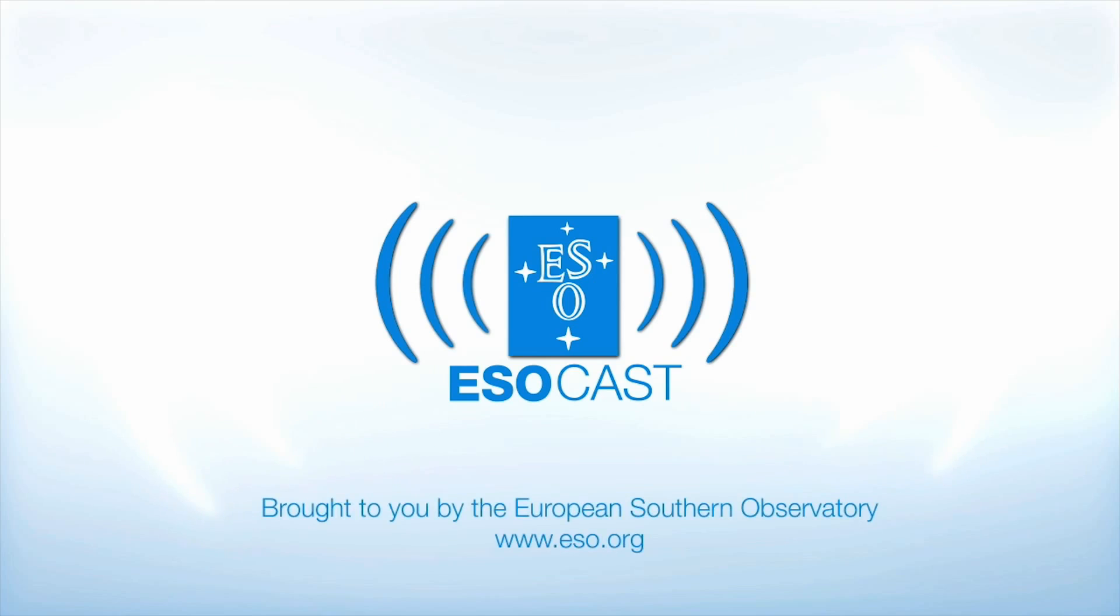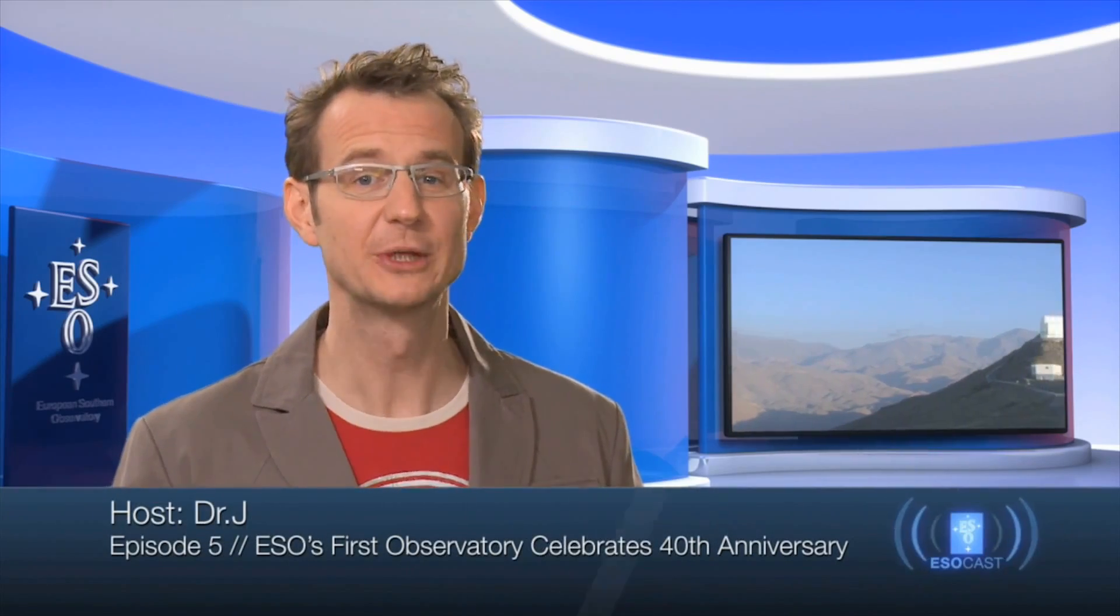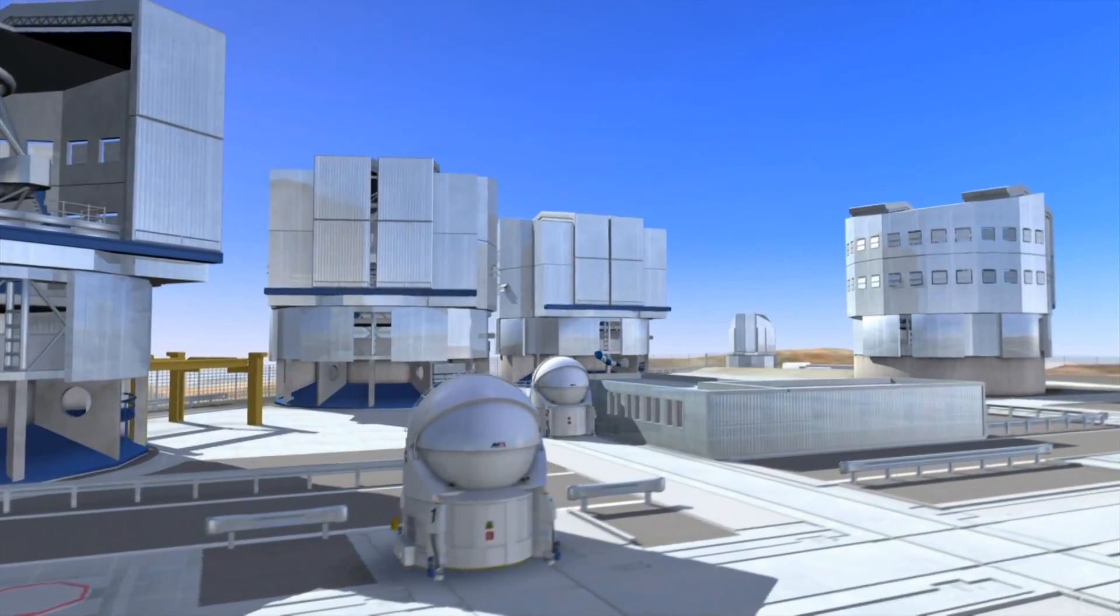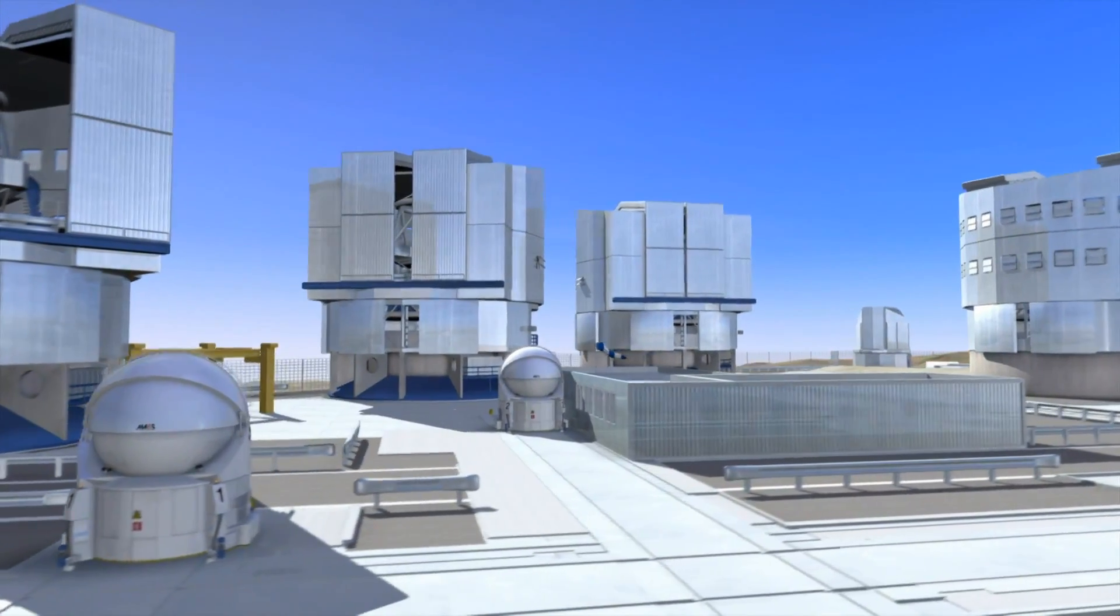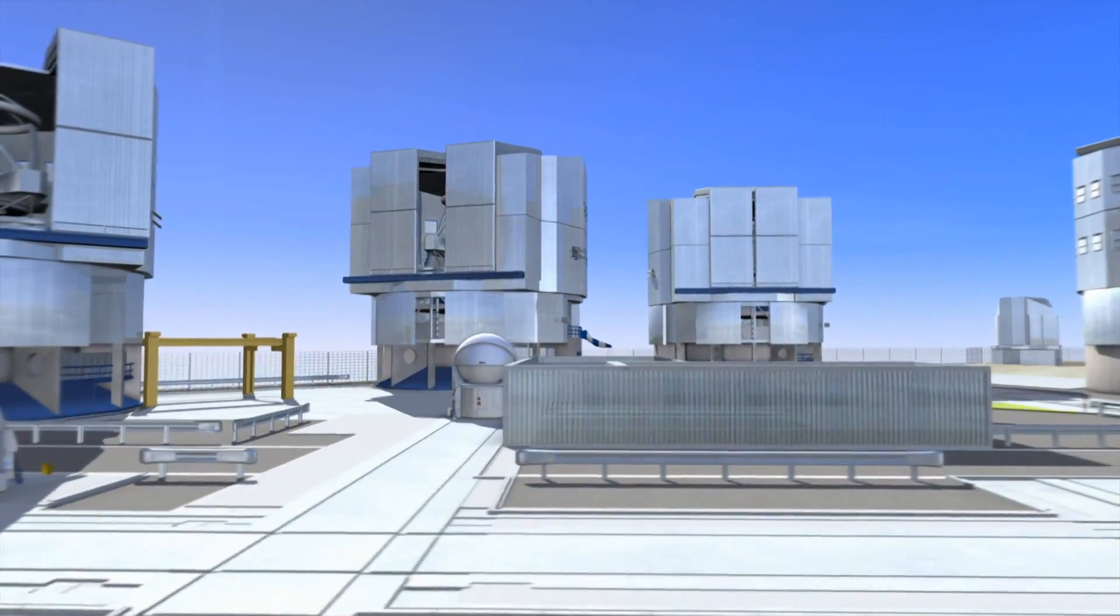Now that you've caught up with Hubble, make sure to get the latest from the ground, too. The ESOcast highlights the best of the European Southern Observatory and its powerful telescopes that observe from high in the Chilean Andes, at the Southern Hemisphere's best-known sites for astronomical observations.